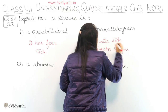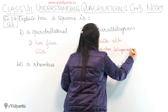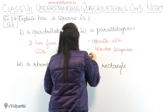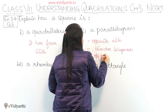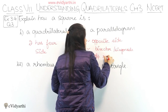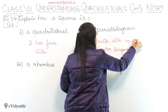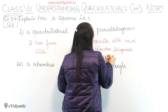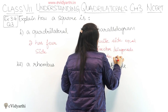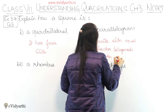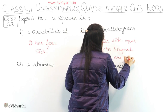That is one point. Plus, opposite sides are parallel. So here we can write equal and parallel — opposite sides are equal and parallel also.